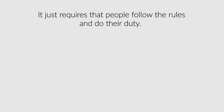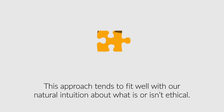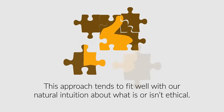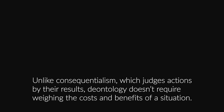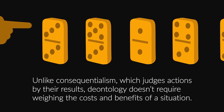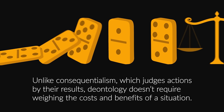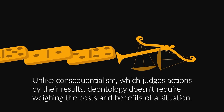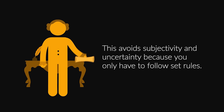Deontology is simple to apply — it just requires that people follow the rules and do their duty. This approach tends to fit well with our natural intuition about what is or isn't ethical. Unlike consequentialism, which judges actions by the results, deontology doesn't require weighing the costs and benefits of a situation. This avoids subjectivity and uncertainty because you only have to follow set rules.